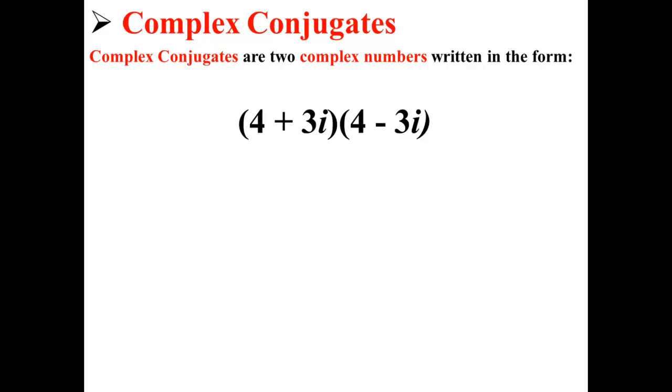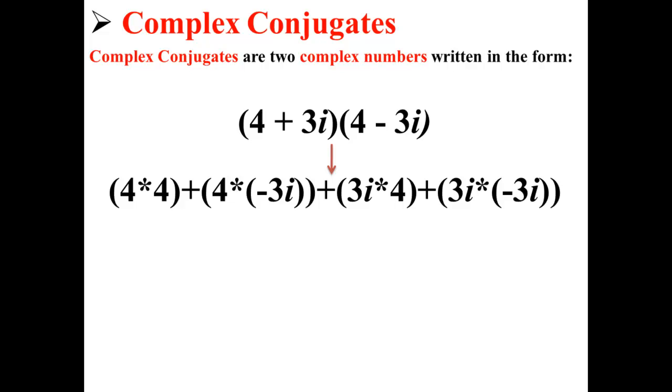Let's try to multiply two complex conjugates. We have 4 plus 3i times 4 minus 3i. After applying the FOIL method, this gives us 4 times 4 plus 4 times negative 3i plus 3i times 4 plus 3i times negative 3i.